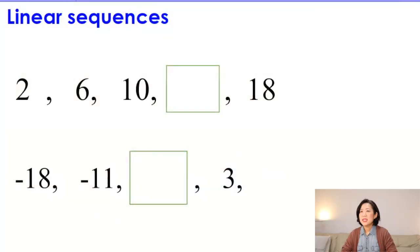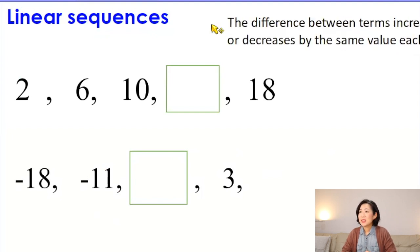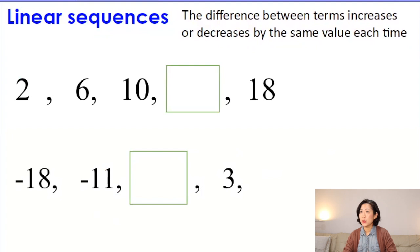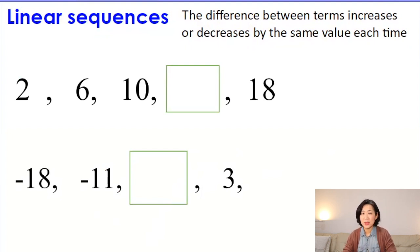We will especially focus on linear number sequences and non-linear number sequences. To find the formula, we are going to use our algebra skills and spatial number skills. Let's begin with linear number sequences. So what is a linear number sequence? The difference between terms increases or decreases by the same value each time. Terms are the numbers — each number in the number sequence. Let's have a look at the number sequences below and find the missing numbers.